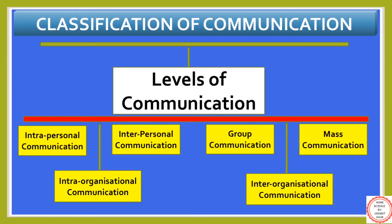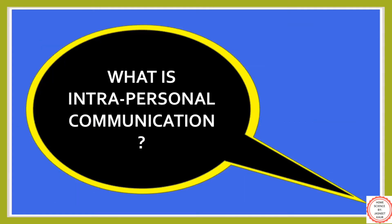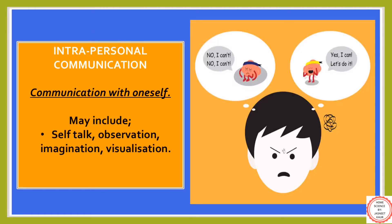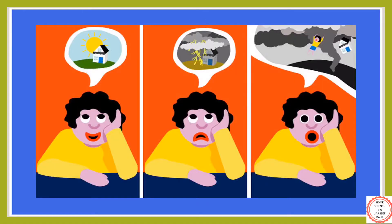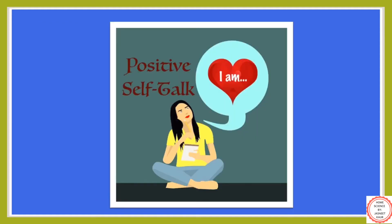The next classification of communication is on the basis of levels of communication. This is further categorized as intrapersonal communication, intra-organizational communication, interpersonal communication, group communication, inter-organizational communication, and mass communication. Intrapersonal communication is the type of communication which a person does with oneself. It may include daydreaming, self-talk, observation, imagination, visualization, and even constant thinking of certain events.